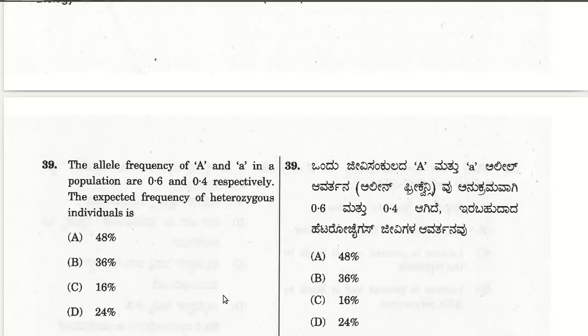The thirty-ninth question: the allele frequency of A and a in a population are 0.6 and 0.4 respectively. The expected frequency of heterozygous individuals — using the Hardy-Weinberg equation p² + 2pq + q² = 1 — gives 2pq = 2 × 0.6 × 0.4 = 0.48, so 48%.